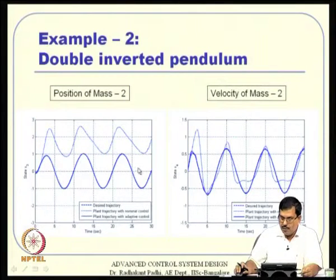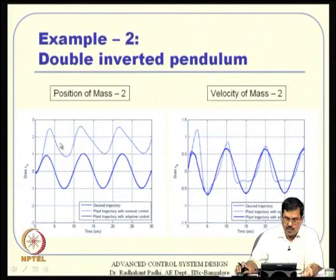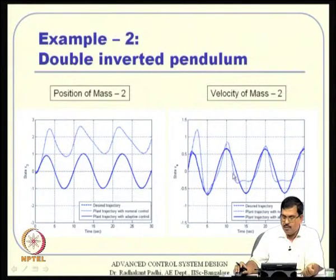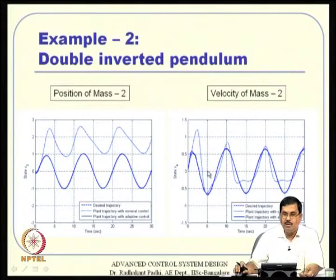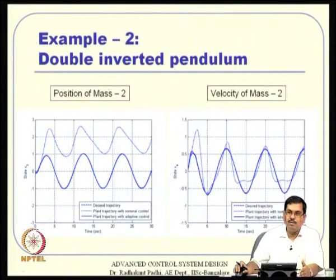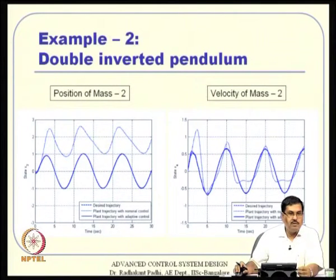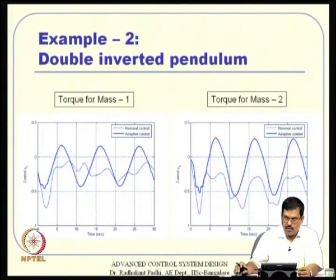The kinematic states (x_1, x_3) show smoother behavior since they are integrated effects, while dynamic states (x_2, x_4) show more transient. With adaptive control, the actual system behavior rapidly approaches the nominal system behavior. The control signals for nominal and adaptive controllers differ significantly, and that difference is what enforces the desired behavior.